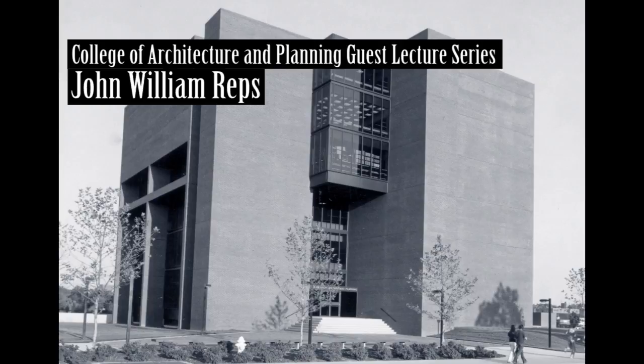My conservative estimate is that at least 4,000 different city views were issued in the 19th century of American cities. Like lithography itself, however, the tradition of printed city views had its origins in Europe, beginning with woodcuts as book illustrations. Hundreds of them, like this one of Rome, embellished the pages of the Nuremberg Chronicle printed in 1493.